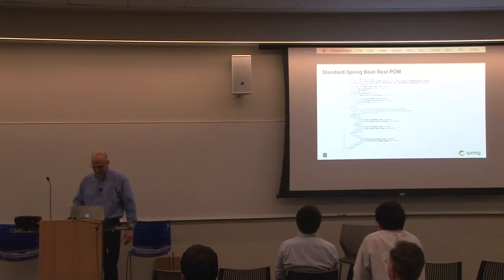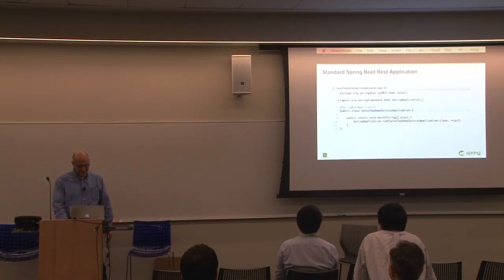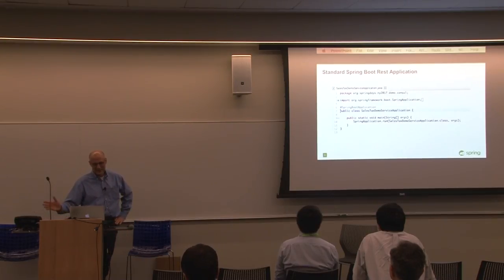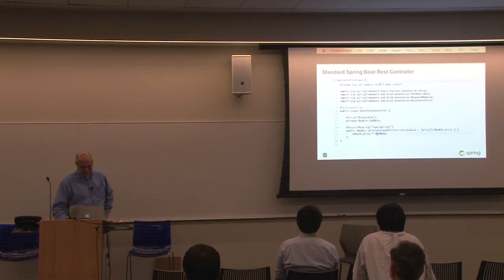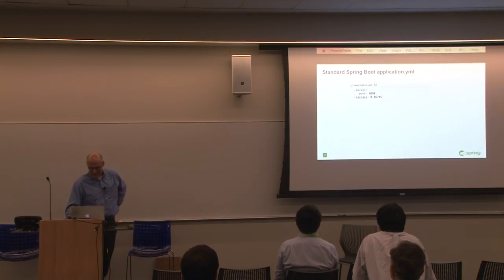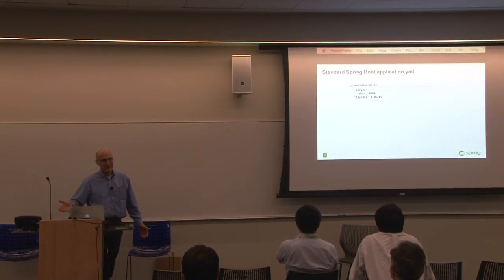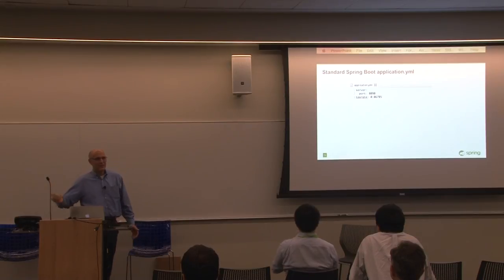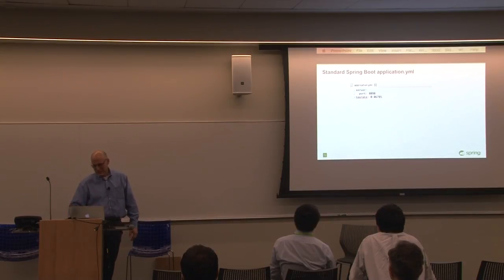It has the web starter, the actuator, and then a parent POM for Spring Boot. We have our main application just like John did yesterday with the Spring Boot annotation and the start method. Essentially it's a REST controller. It imports the tax rate from an applications.yaml file and it does a calculation. You pass in a price and it multiplies the two and returns the answer. Very simple.